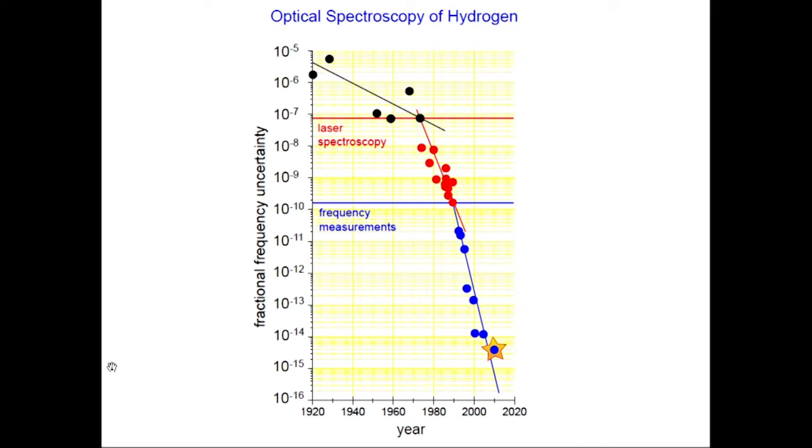This has been pushed now so that we can make spectroscopy in hydrogen to 15 digits of decimal precision. Have you found a surprise yet? Maybe. I will talk about that in the end.